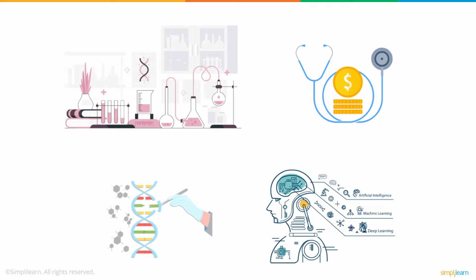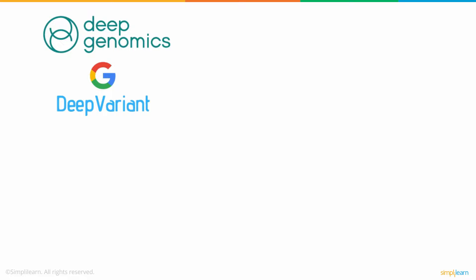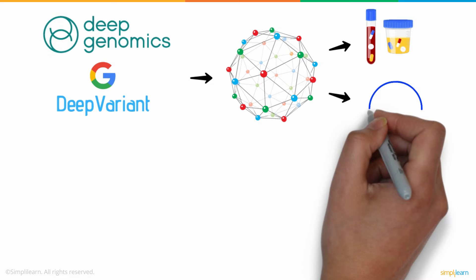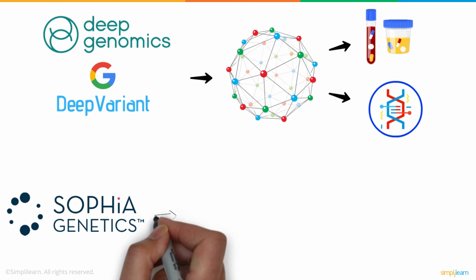Organizations like Google's DeepVariant and Deep Genomics have machine learning models to facilitate easier drug tests and gene sequencing projects. Another institution, Sophia Genetics, has made progress using AI models to prescribe personalized medications for cancer patients and other diseases.